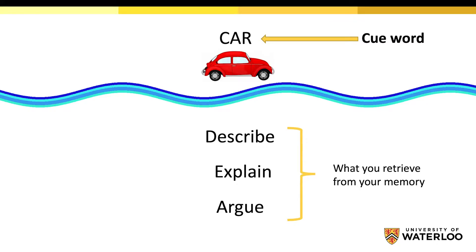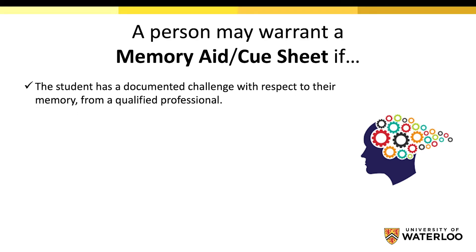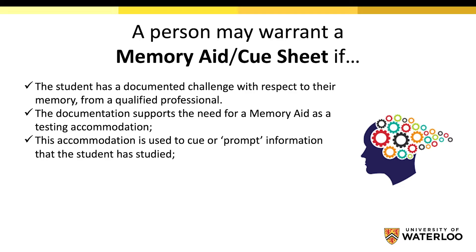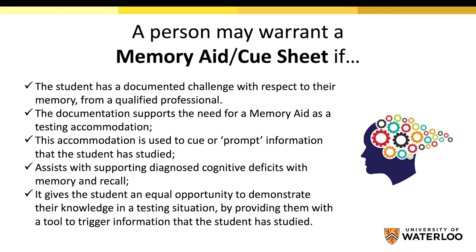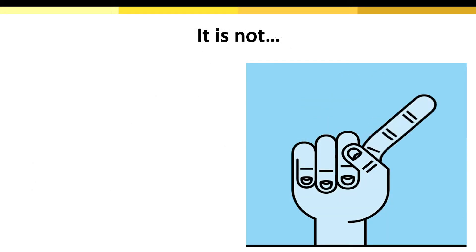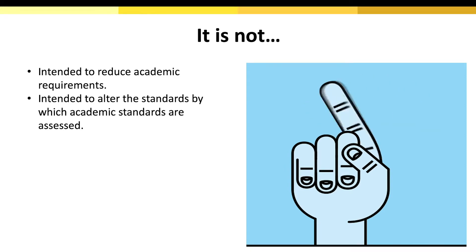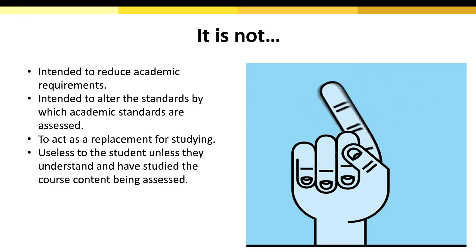Let's take a look at the circumstances in which a student may warrant a memory aid. A student who requires a memory aid must present documentation from a qualified professional which supports the need for this aid to Accessibility Services. The purpose of the memory aid is to cue information that the student has studied but may have difficulty recalling due to diagnosed cognitive processing deficits associated with memory and recall. It helps to prompt the student's memory to provide the answer. It gives the student equal opportunity to demonstrate their knowledge in a testing situation by lessening the impact of their disability. It is not intended to reduce academic requirements or alter the standards by which academic performance is assessed, nor is it a substitute for not studying. A proper cue sheet will not be useful to the student unless the student knows and understands how to use the information that it refers to.